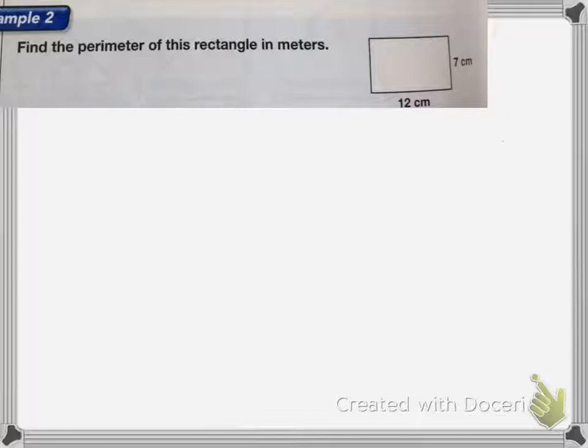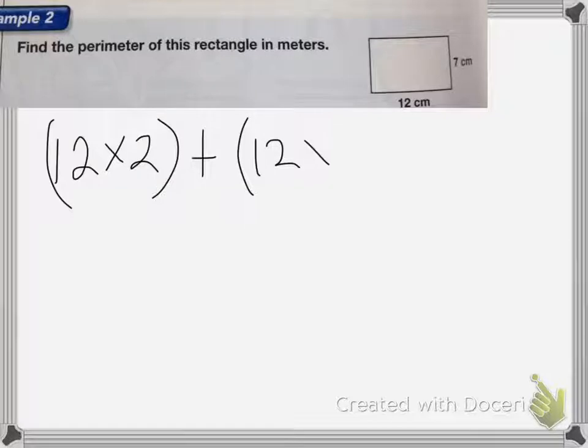Okay, find the perimeter of this rectangle in meters. So first, I need to figure out what the perimeter is in centimeters. So I would do 12 times 2 plus 12 times, sorry, 7 times 2, okay? Because there's two sides that are 12 and two sides that are 7.